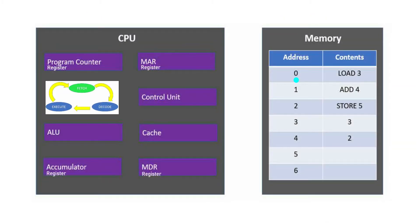Each component within the CPU plays its part in the Fetch, Decode, Execute cycle. The first instruction is sent along a bus from the memory to the CPU, and the program counter is set to the address of the first instruction, which is 0. This instruction is copied to the memory address register.